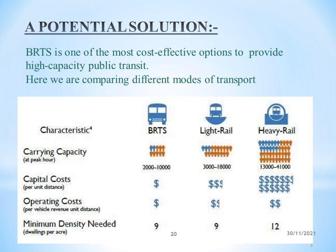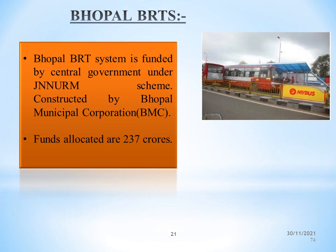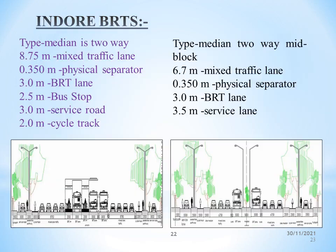Different modes of transport — BRTS, light rail, and heavy rail — are compared. Regarding Bhopal BRTS, the system is funded by the central government under the JnNURM scheme and constructed by Bhopal Municipal Corporation, with funds allocated of Rs. 237 crores. The median two-way type includes an 8.75 m mixed traffic lane, 0.350 m physical separator, 3 m BRT lane, 2.5 m bus stop, 3 m service road, and 2 m cycle track. The mid-block section has a 6.7 m mixed traffic lane, 0.350 m physical separator, 3 m BRT lane, and 3.5 m service lane.